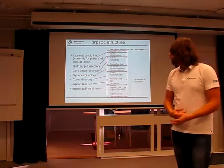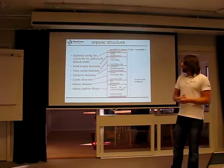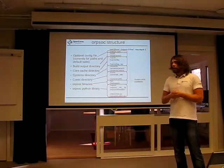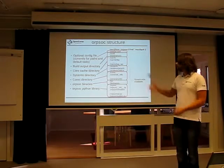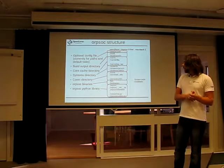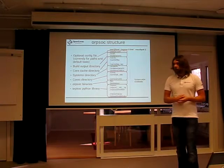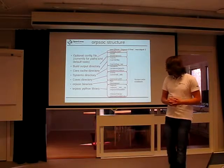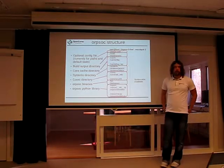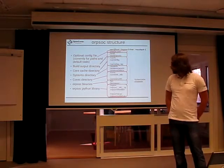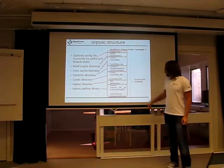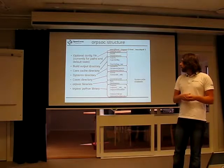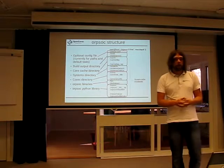Let's take a look at the structure in Orsock version 3. In the root, we have an optional config file, mainly used to set up some paths and default tools — you could run without it. You have a build directory where all your things end up, and most of this is configurable. We have a cache for things that are downloaded. We have a systems directory that contains descriptions of the systems themselves. Cores contains descriptions for the cores. A binary and then a Python library which basically is Orsock — so I switched from a Makefile-based implementation to Python. And these are system-wide installable, so you should be able to apt-get your Orsock and supply your own build and cache directories.